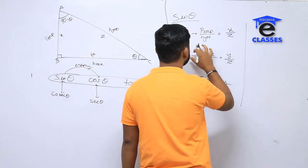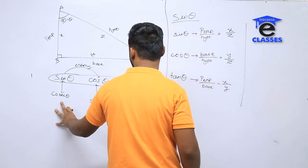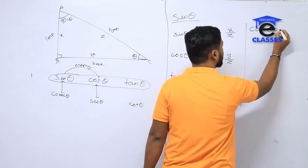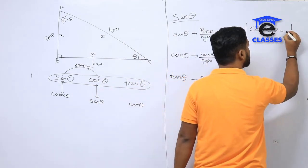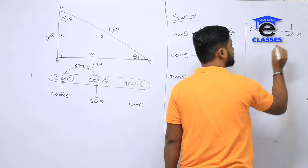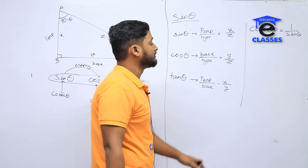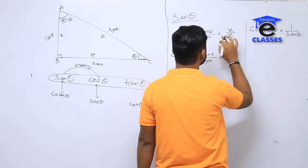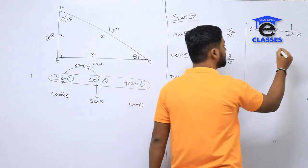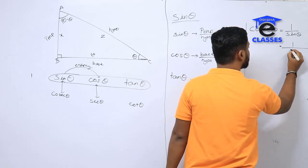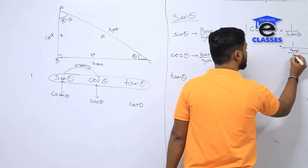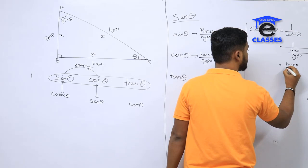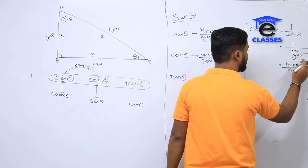Let's do sine theta. What is the reciprocal of sine theta? It is 1 divided by sine theta. I'm using this technique. Cos theta — I'm using sine theta — perpendicular by hypotenuse. That's called 1 by perpendicular by hypotenuse, which equals hypotenuse by perpendicular.